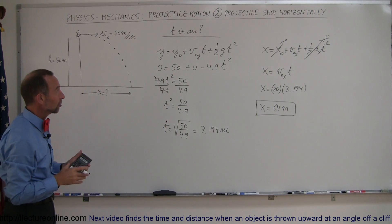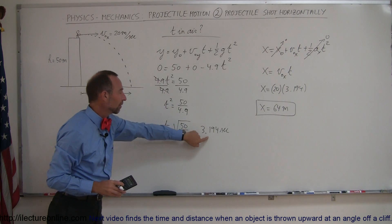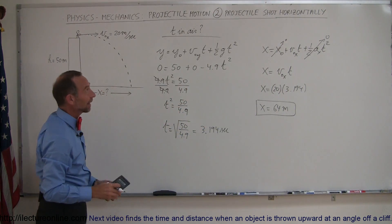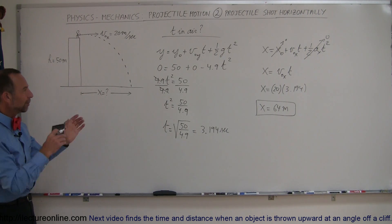So again, notice the strategy. Find time in the air first. Use this equation to do so. Once you have the time, then use this equation to find distance in the x direction. And that's how you do a problem like this.